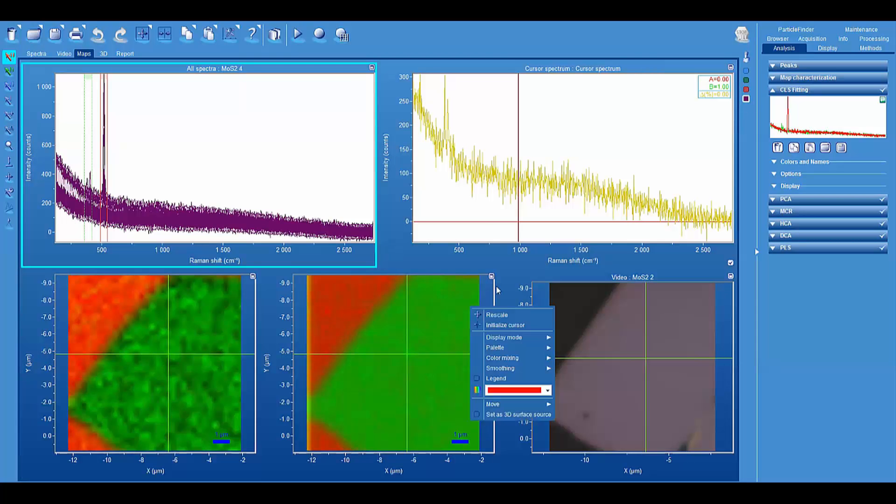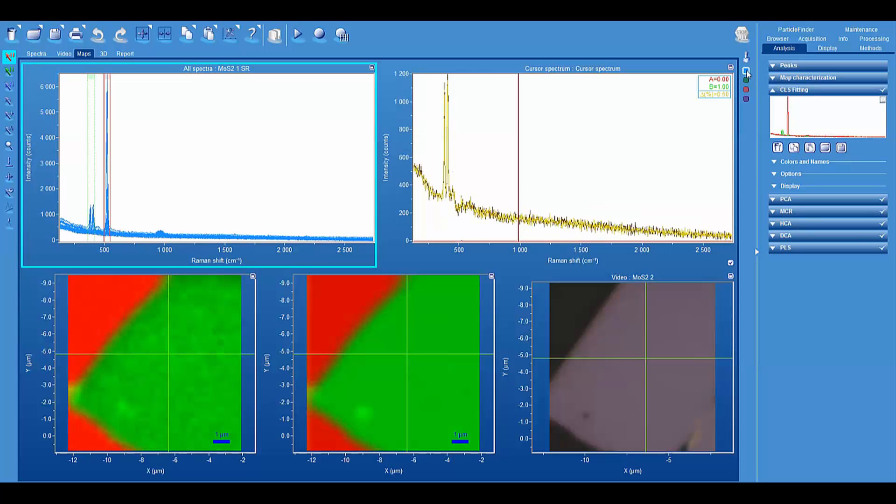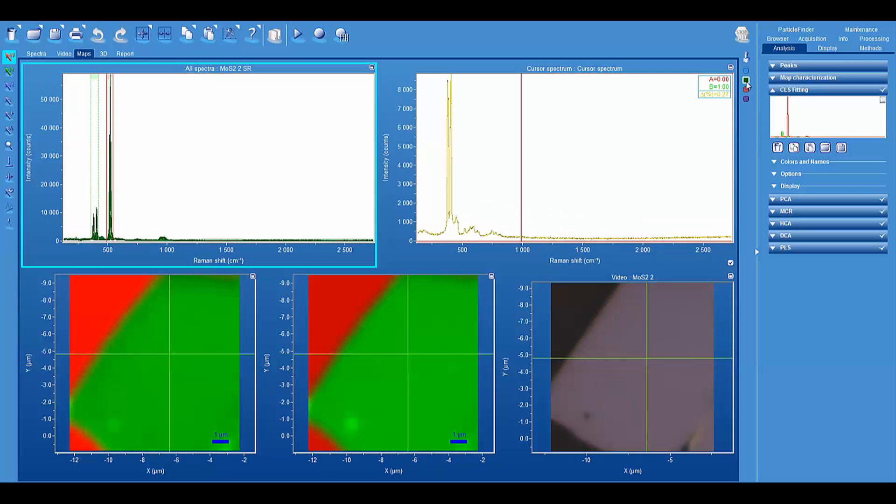So here's 10 milliseconds per point, 50 milliseconds per point, 100 milliseconds per point, and one second per point. I hope by going through this demonstration here, you could see the importance of the chemical contrast as manifest in the different spectra and how, if one has that, then the opportunities for fast Raman imaging are indeed great.